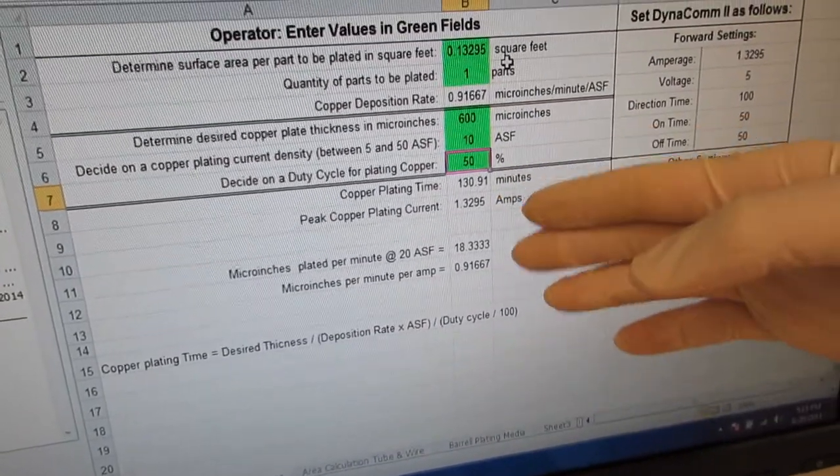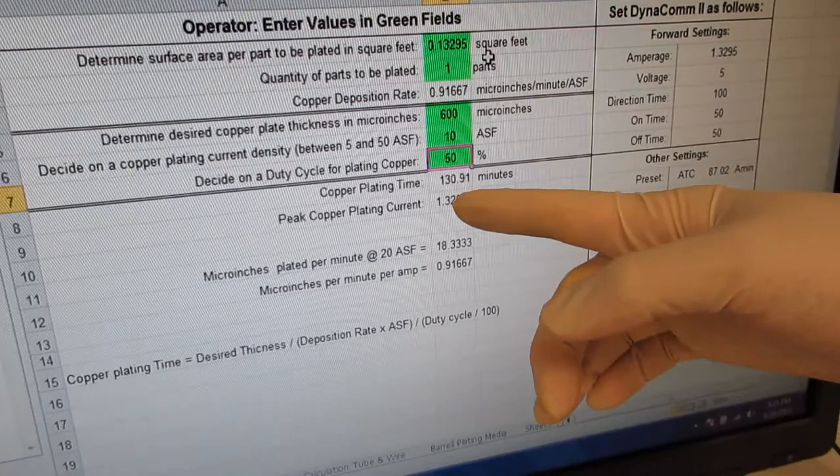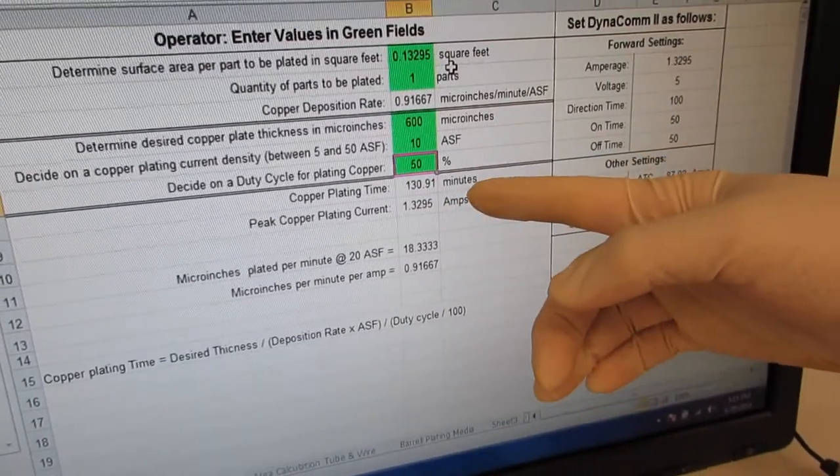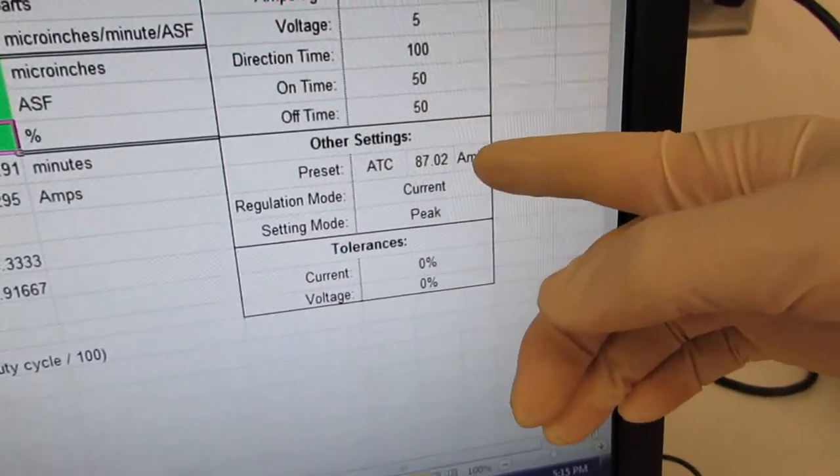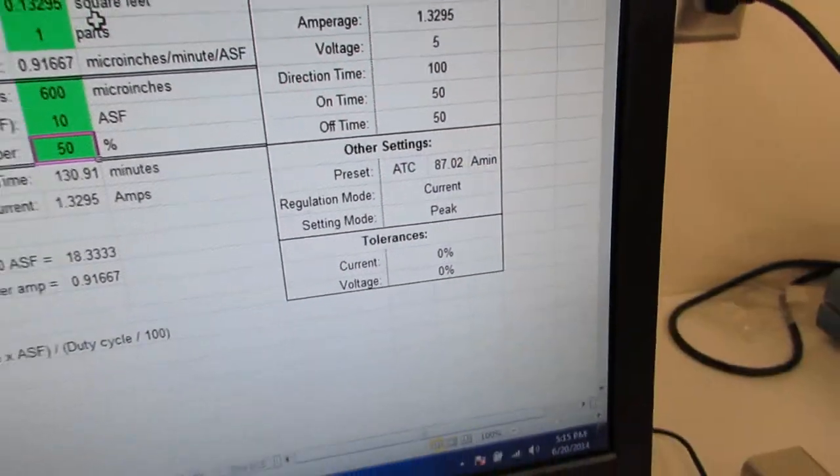And we have, but the numbers we want to see are the 1.3295 amps, and the ATC, the amp minutes for the board, which is 87.02.